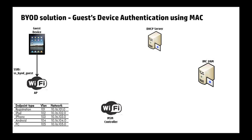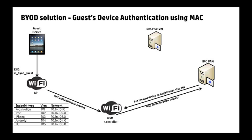The access point is advertising the SSID SS_BYOD_guest, and the iPad connects up to that network. The access point sends a MAC authentication request over to the MSM controller, which then forwards it to the IMC server. The IMC server looks in its database to see if it recognizes the MAC address, and if it doesn't, it directs the MSM controller to put that new device on VLAN 101 — the registration VLAN. The MSM controller directs the AP to do that, and the AP puts the guest device on VLAN 101.